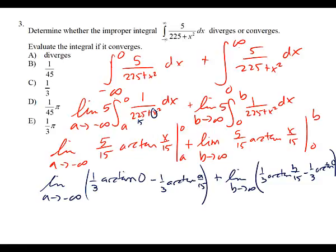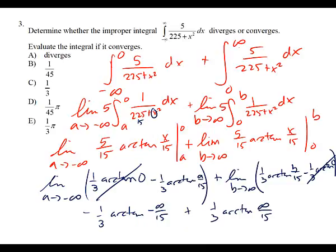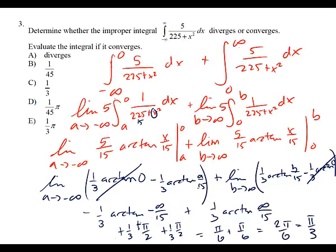The arc tangent of zero is zero, so those terms vanish. Plugging in the infinities: arc tangent of negative infinity is negative pi over two, so negative times negative gives positive pi over two, which is one-third times pi over two, equals pi over 6. Plus one-third times arc tangent of infinity, which is pi over two, equals pi over 6. So pi over 6 plus pi over 6 equals 2 pi over 6, which is pi over 3 — answer choice E.